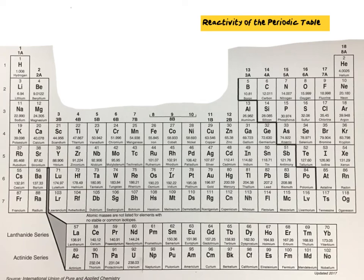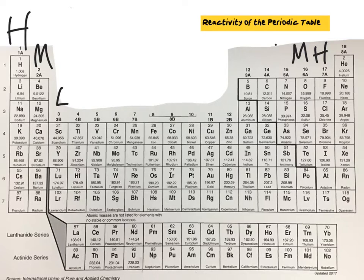For today's lesson we're going to be reviewing reactivity of the periodic table. Groups 1 and 17 have high reactivity, groups 2 and 16 have medium reactivity, and groups 3 through 15 have relatively low reactivity.